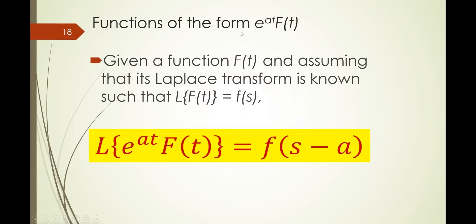So the functions of the form e to the at, f of t, given the function f of t and assuming that its Laplace transform is known, such that the Laplace of the function of t is any function of s, that means the Laplace of e to the at, f of t, is simply f of s minus a. So what does that mean? Take note of this.